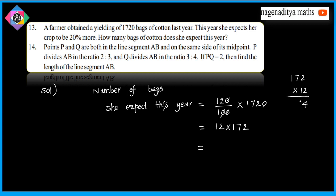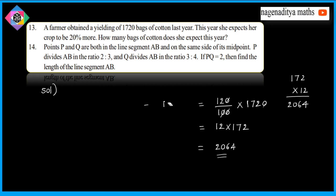12 ones are 12. So this is equal to 2064. Last year 1720, so 20 percent increase this year — 1720. This year the answer is 2064.